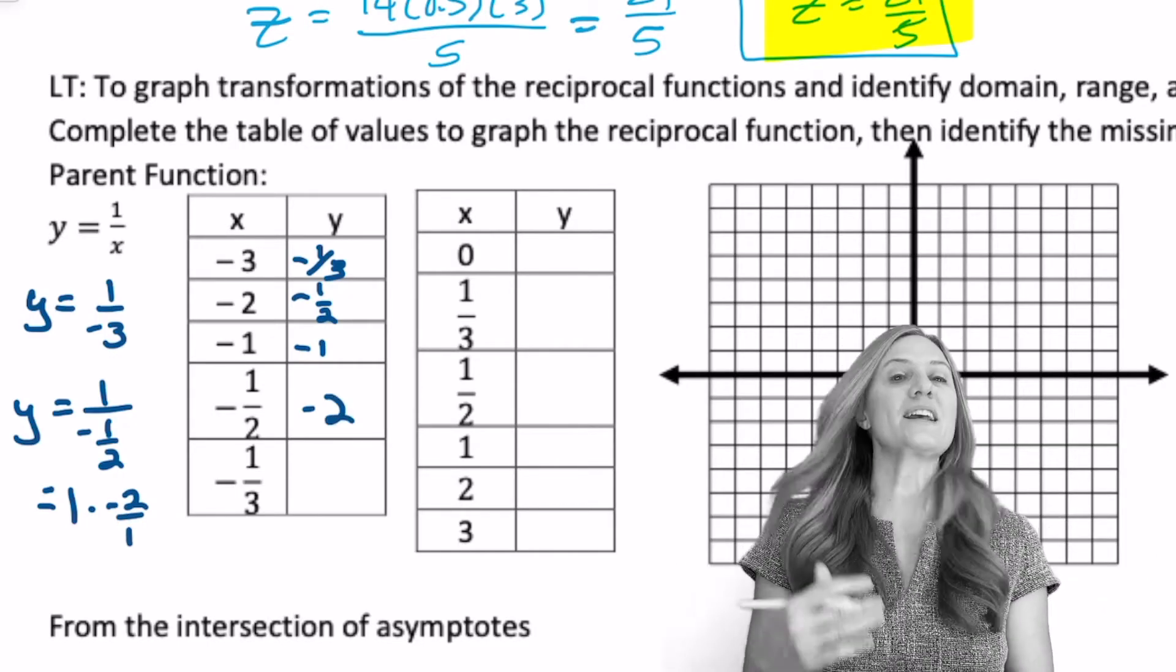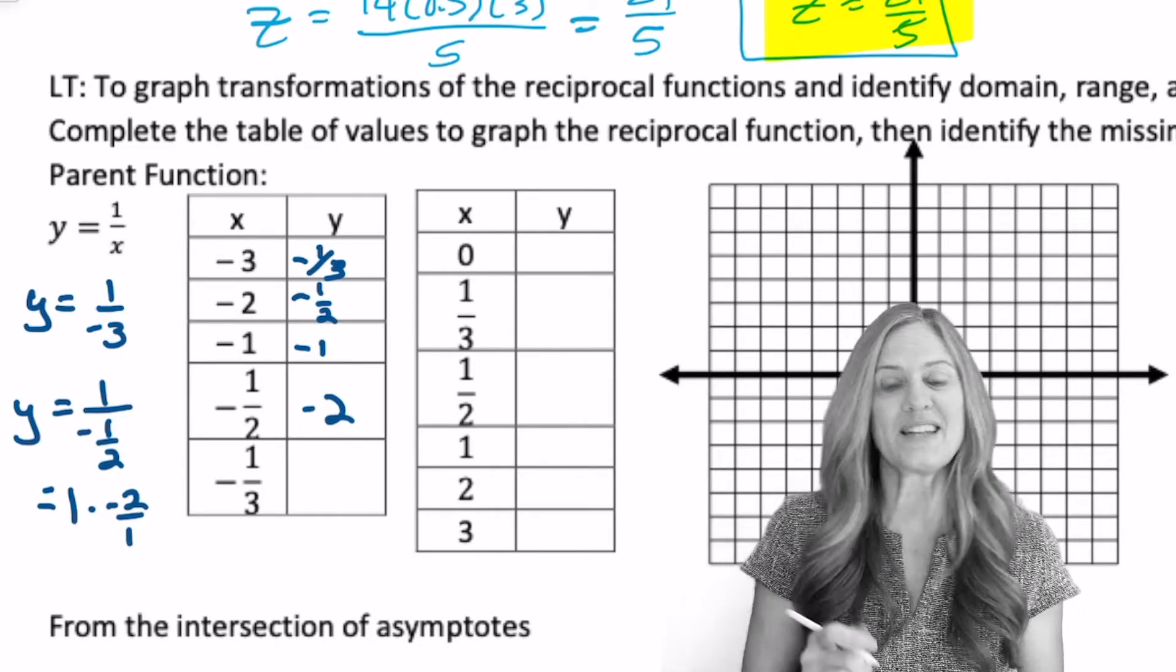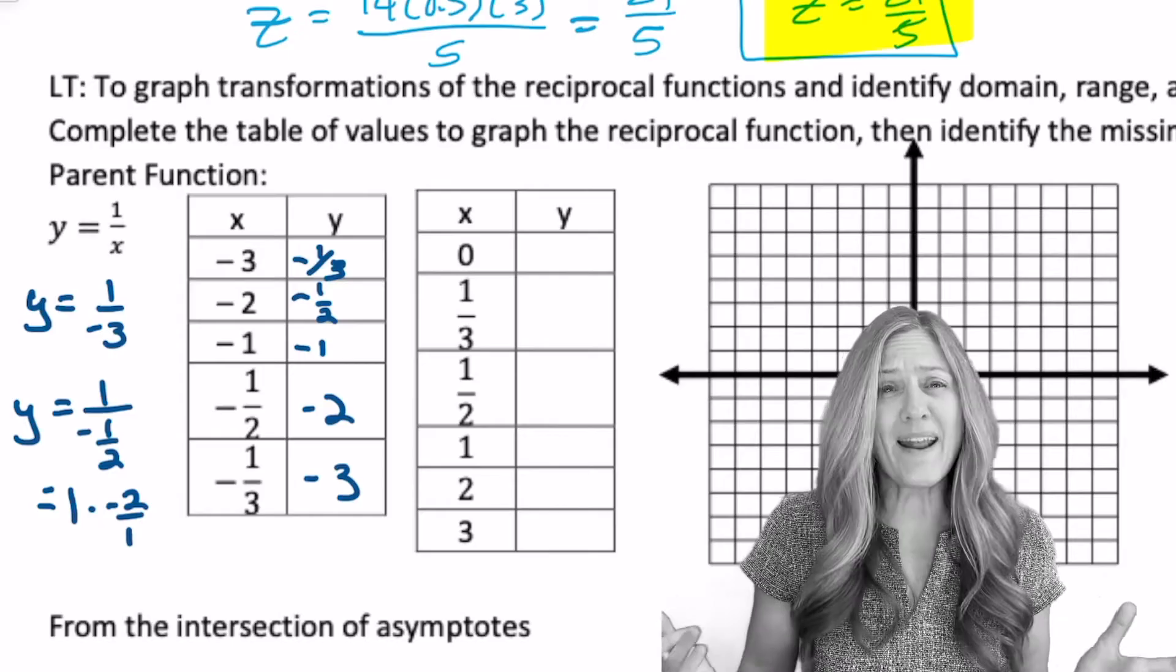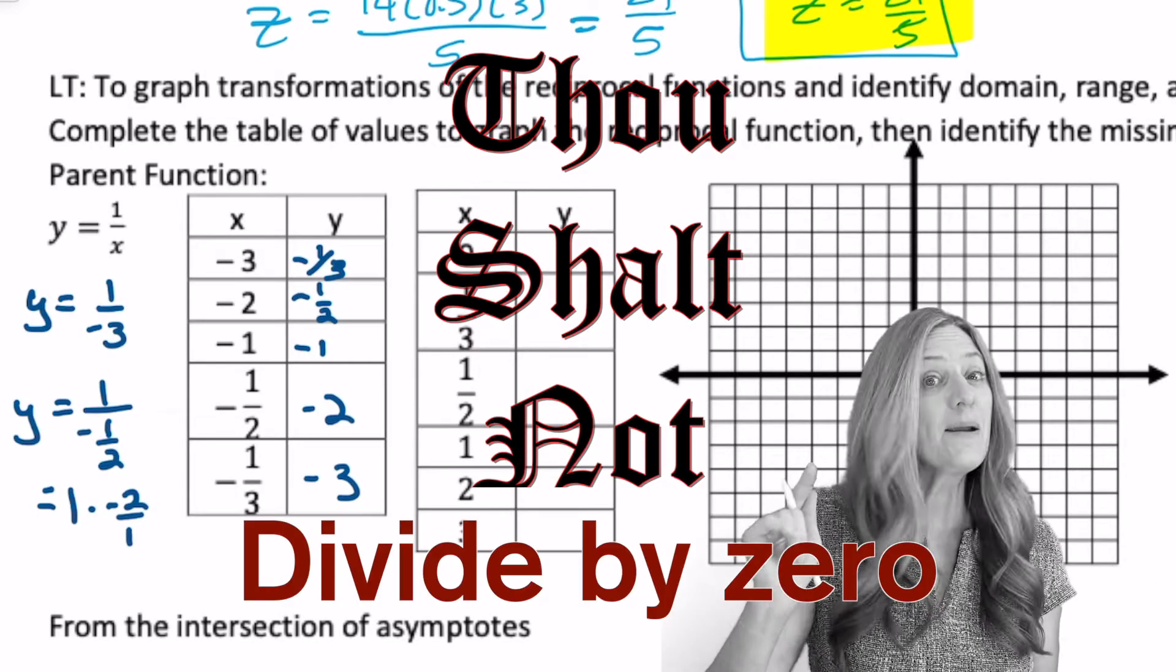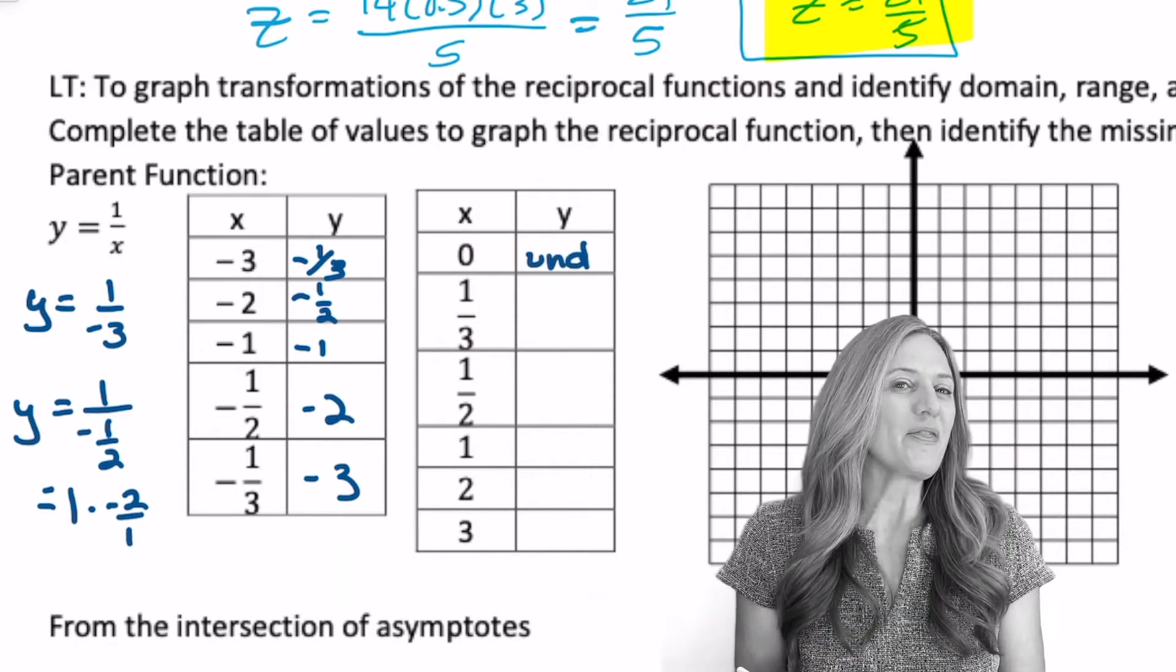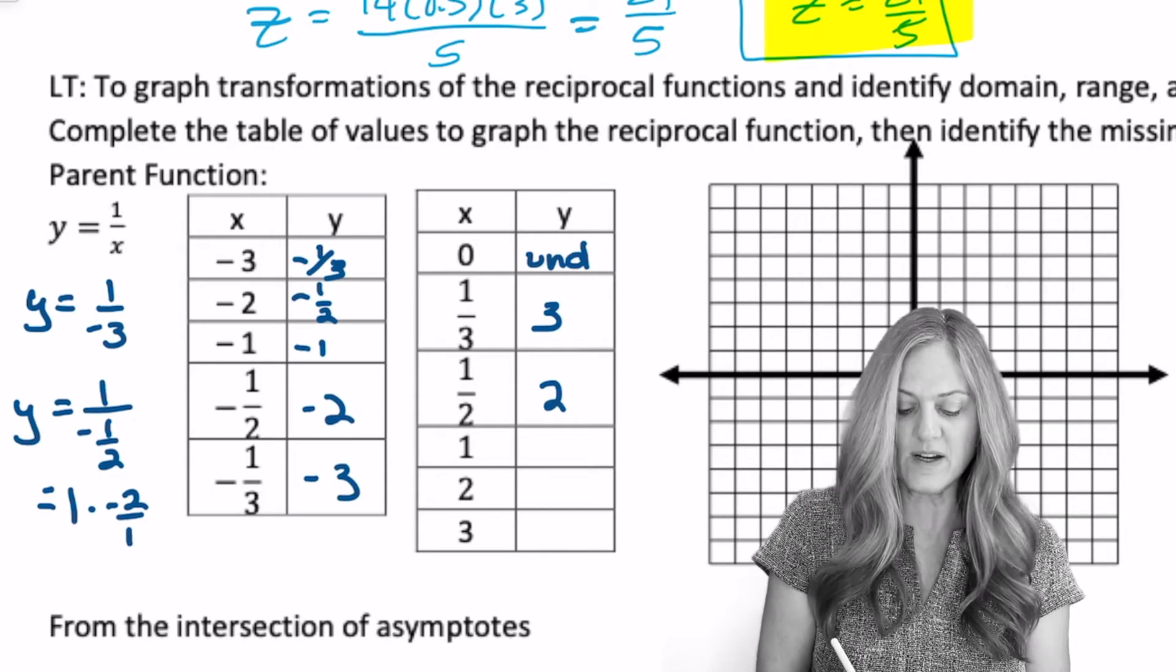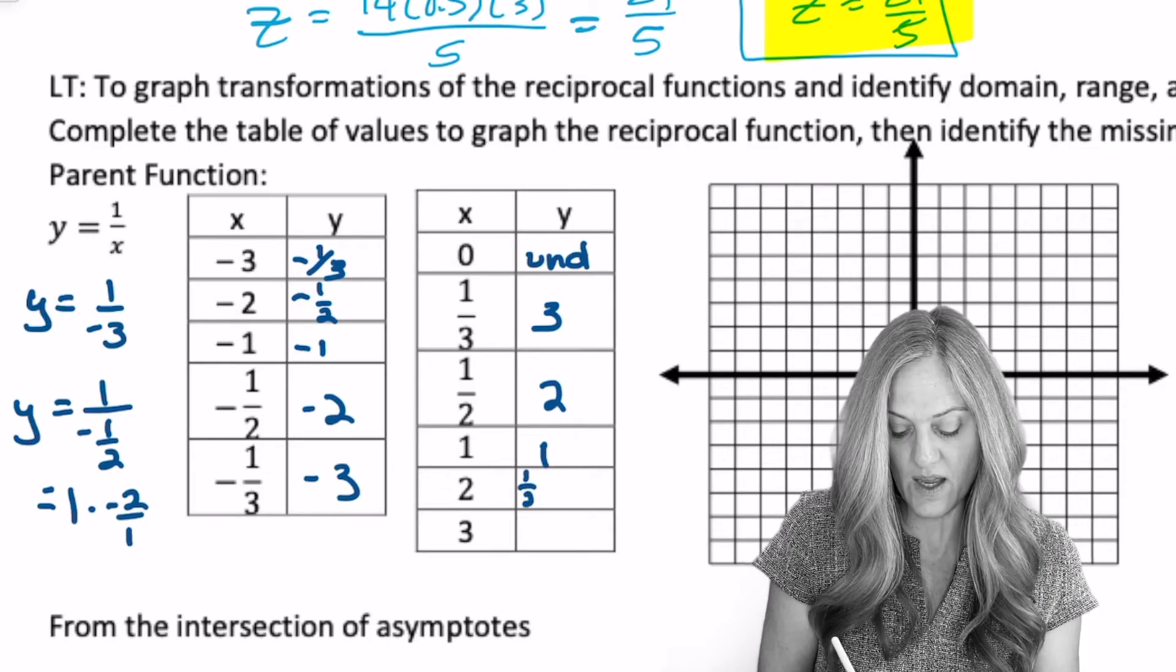So in that case, when I see that 1 divided by negative 1 third, multiply by the reciprocal, 1 times negative 3, negative 3. Maybe I should have started with 0, because what happens? 1 divided by 0, thou shalt not divide by 0. So we say undefined. 1 divided by 1 third, multiply by the reciprocal, we have 3, 2, 1 divided by 1 is 1. 1 divided by 2, 1 half, and 1 third.